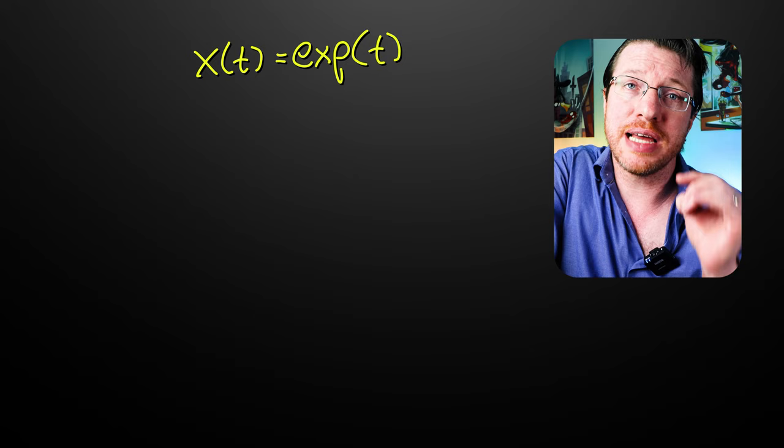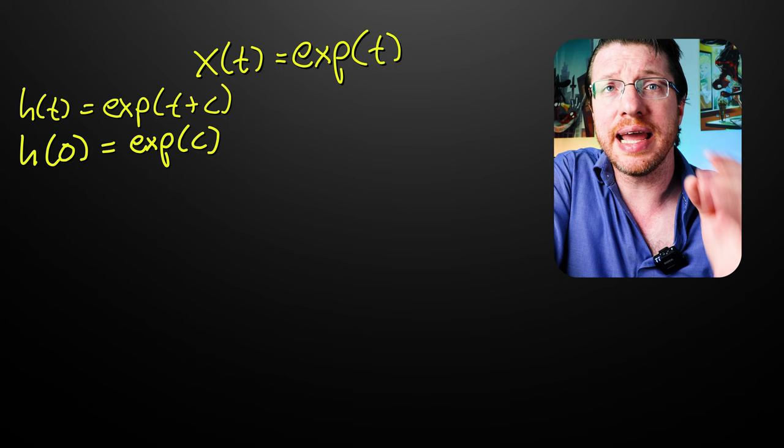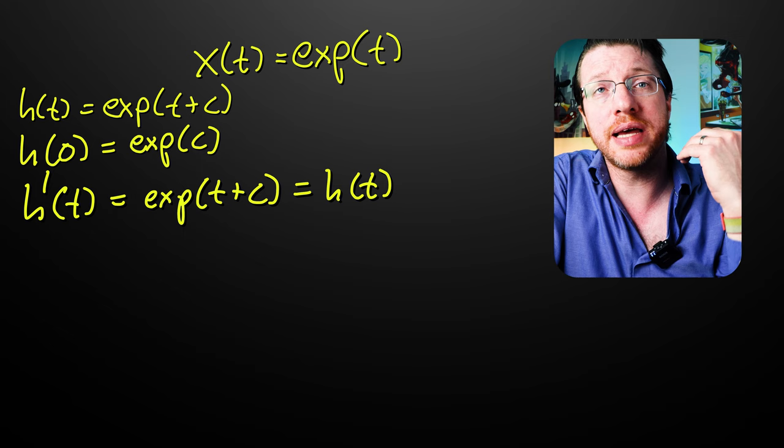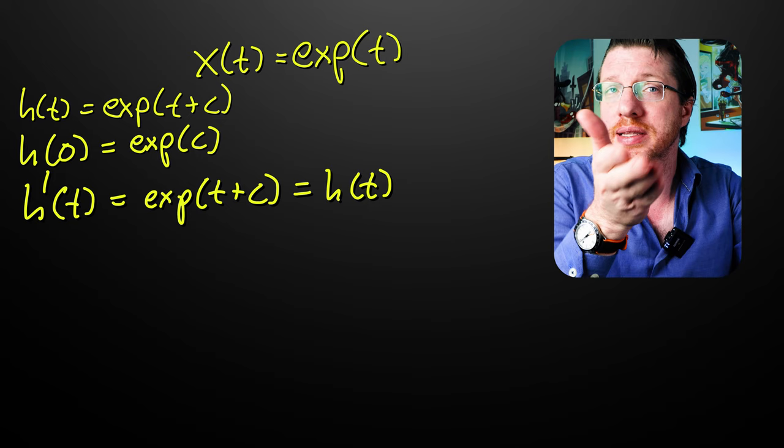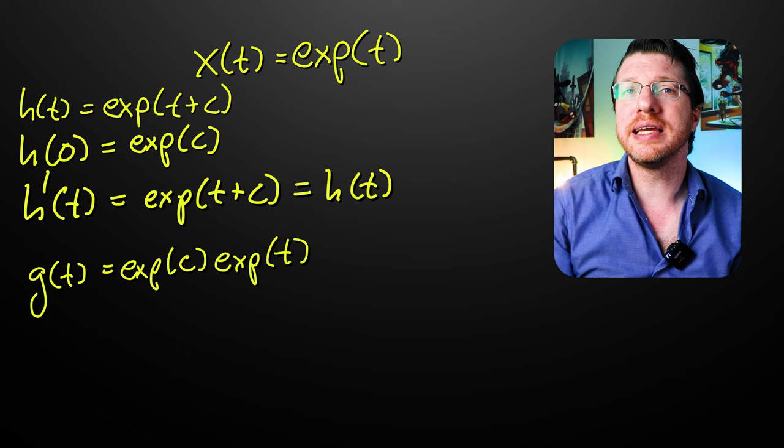Now, notice that if we look at h of t is equal to the exponent of t plus c for some real c, that h of 0 is equal to the exponent of c. And h prime of t is equal to the exponent of t plus c. So h satisfies h prime is equal to h with h of 0 is equal to the exponent of c. You know what else satisfies the same differential equation? g of t is equal to the exponent of c times the exponent of t.